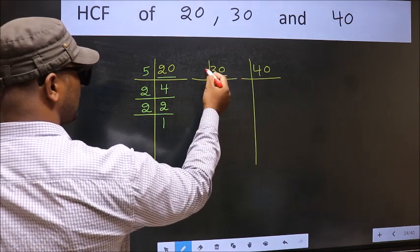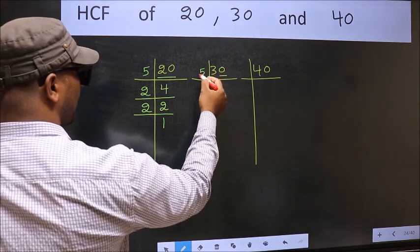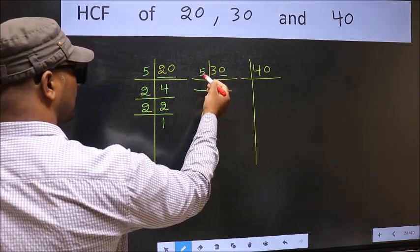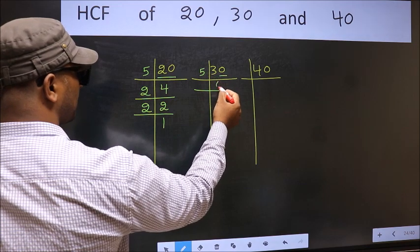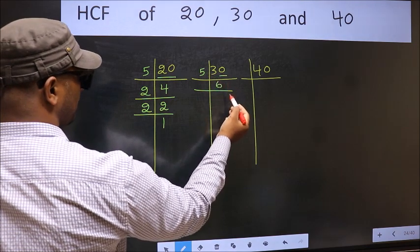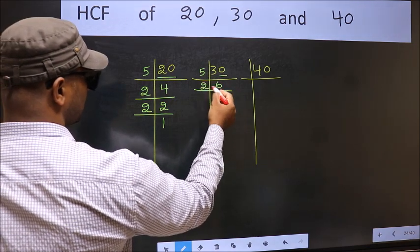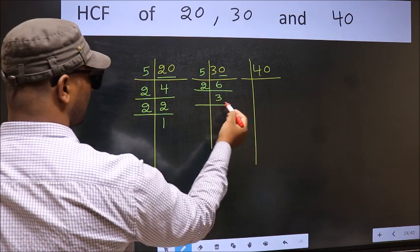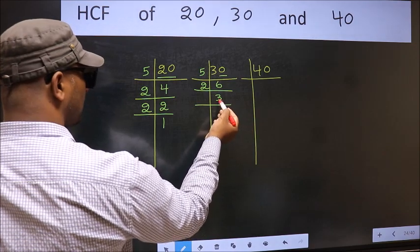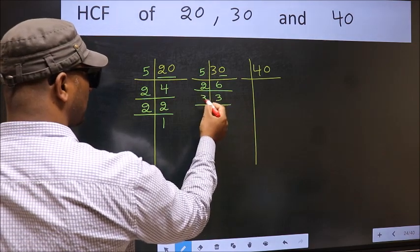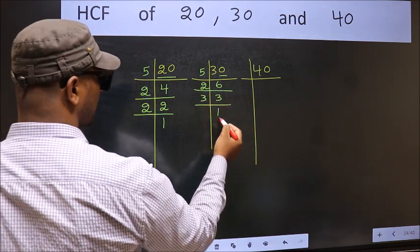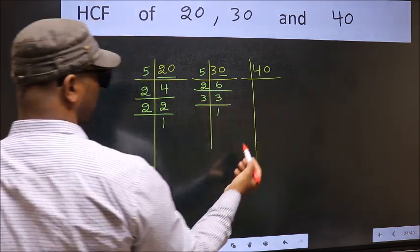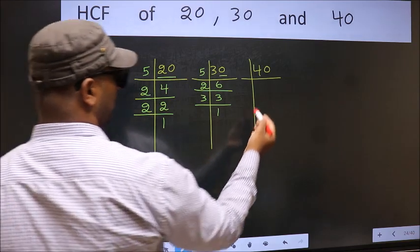Now the other number, 30. Last digit is 0, so take 5. When do we get 30 in the 5 table? 5 × 6 = 30. Now 6 is 2 × 3. Now 3 is a prime number, so 3 × 1 = 3.